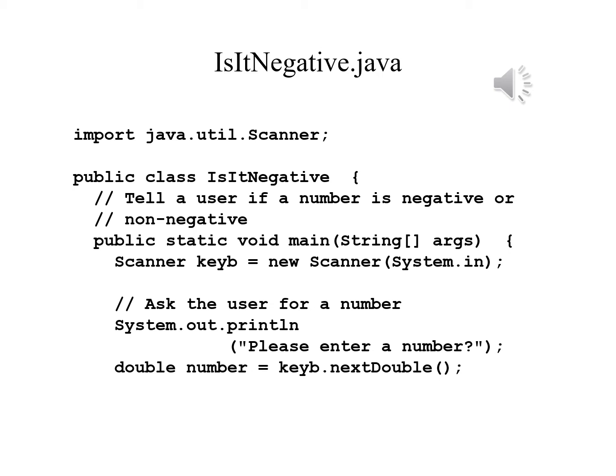The header for the main method: public static void main, in parentheses String open close brackets args, and after the close parentheses, an open brace. Then Scanner keyboard equals new Scanner System.in, which makes input available to us.